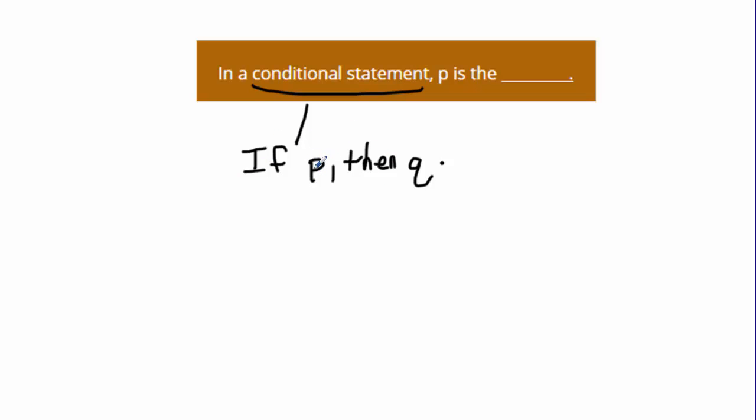Where P is the hypothesis and Q is the conclusion. So when you write a conditional statement in this form, P represents the hypothesis and Q represents the conclusion.